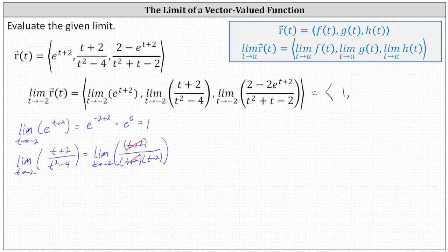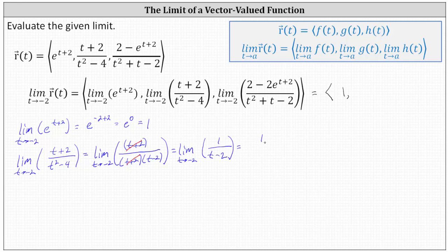t plus two divided by itself simplifies to one, indicating the given limit is equal to the limit as t approaches negative two of — be careful here — one divided by the quantity t minus two. Now we can evaluate the limit by performing direct substitution, which gives us one divided by the quantity negative two minus two, which is one divided by negative four, or negative one fourth. Now we know the y component of the vector is negative one fourth.